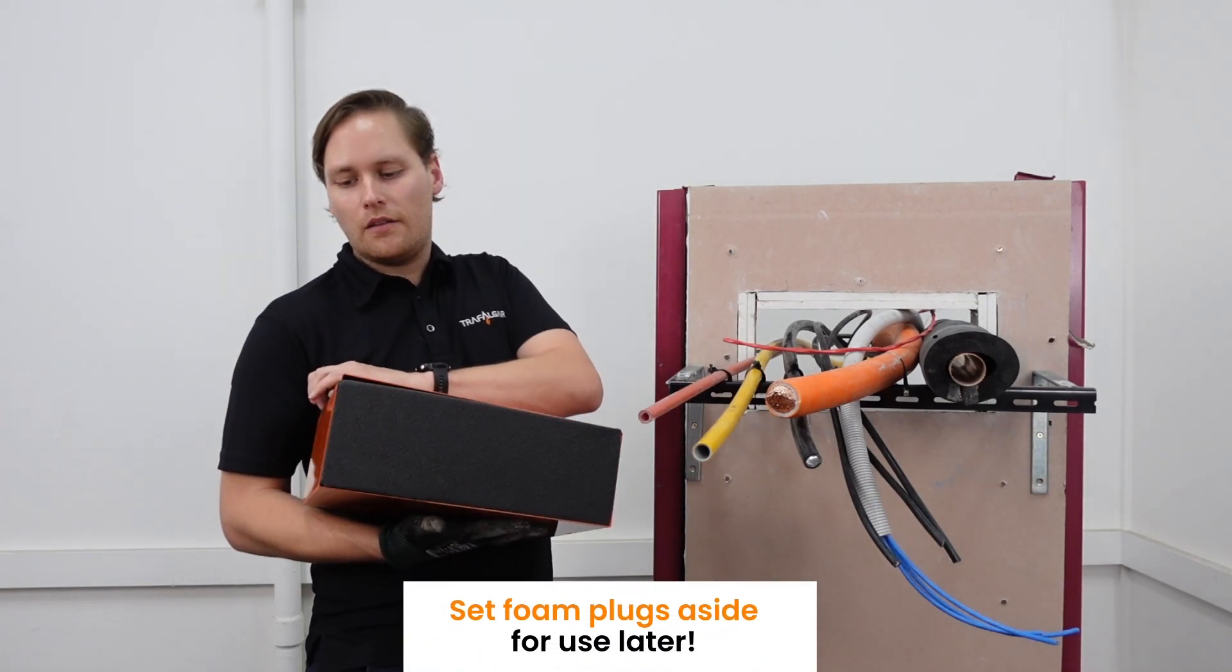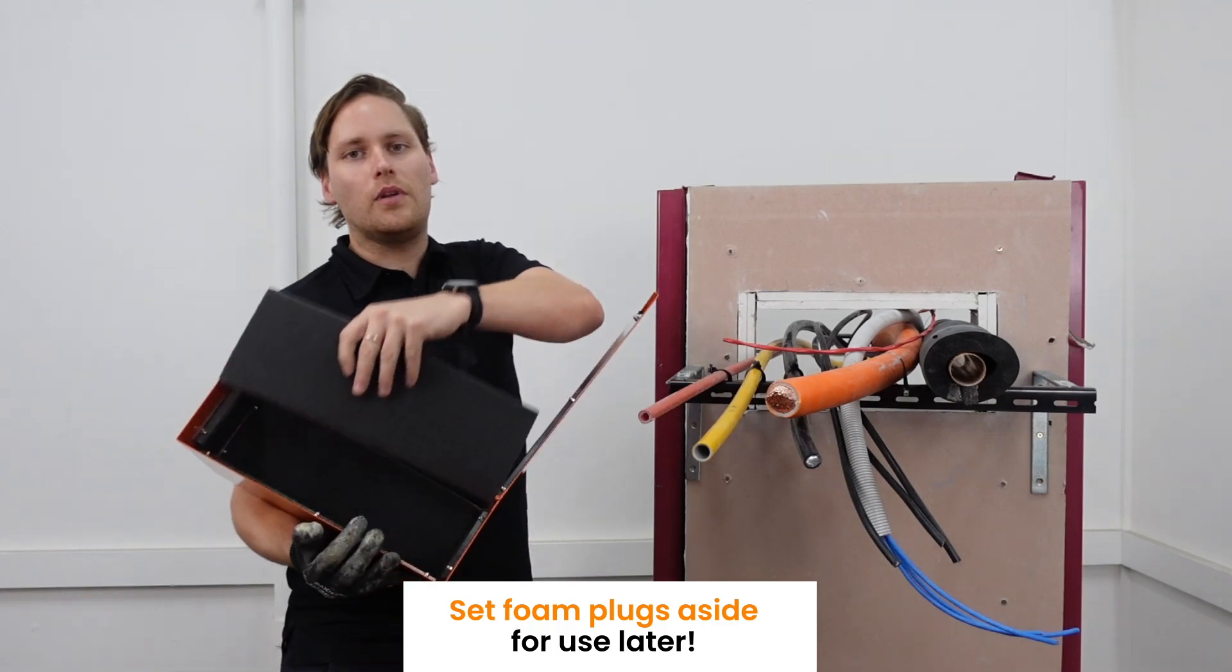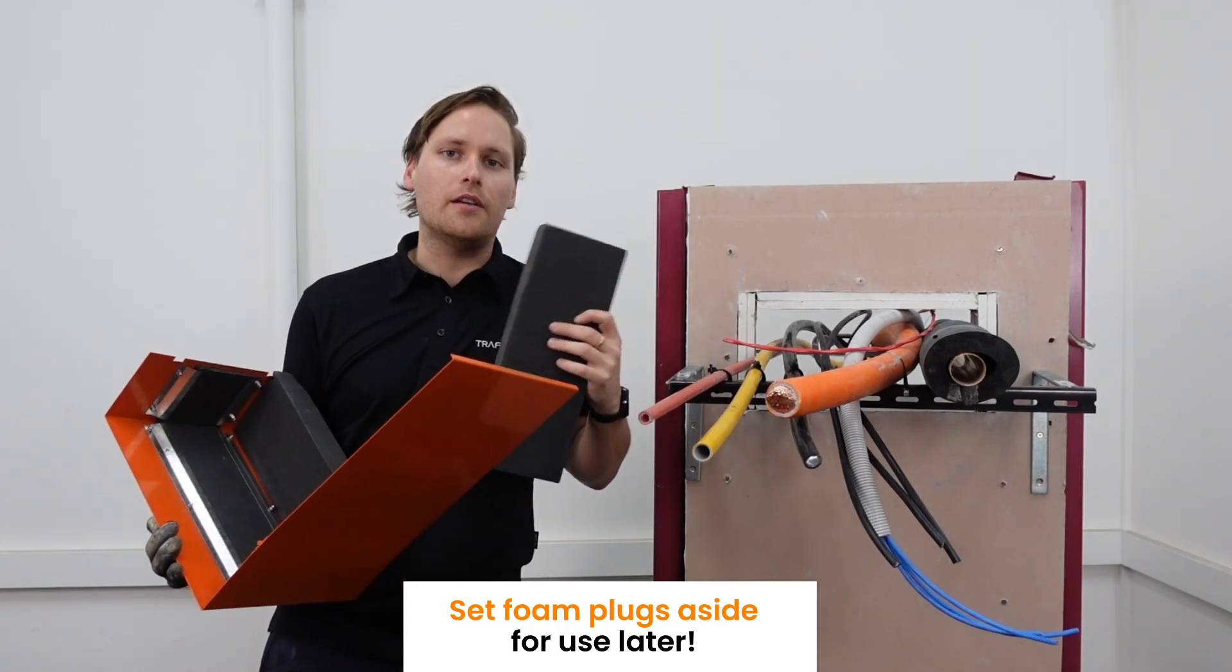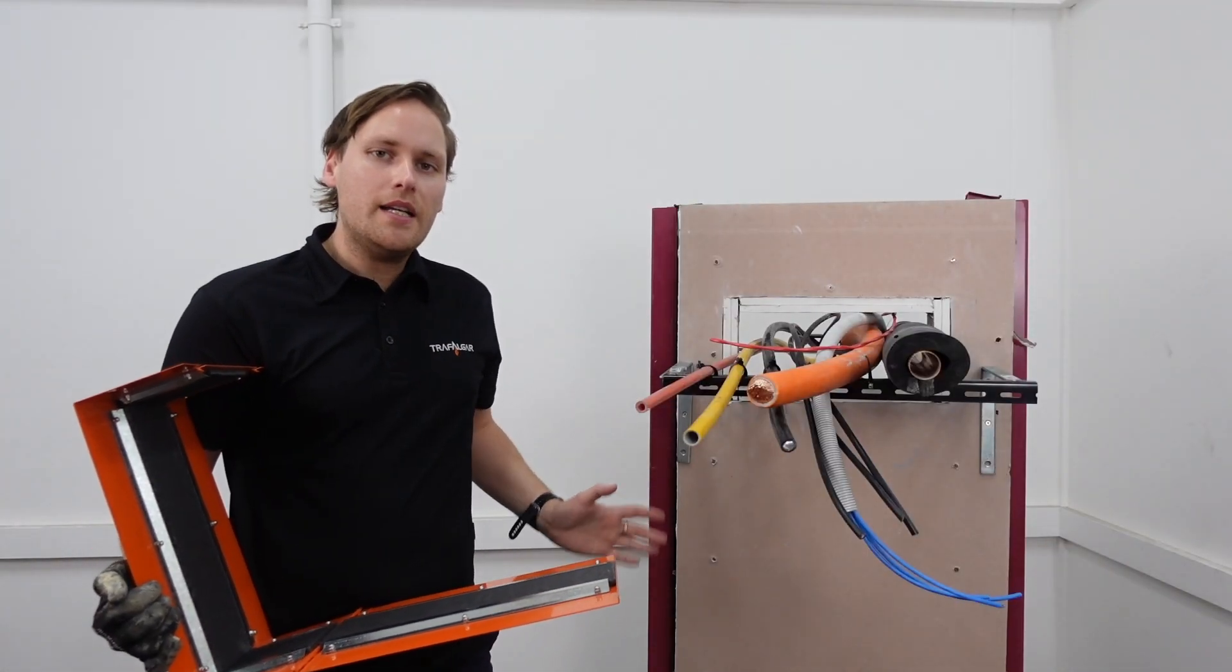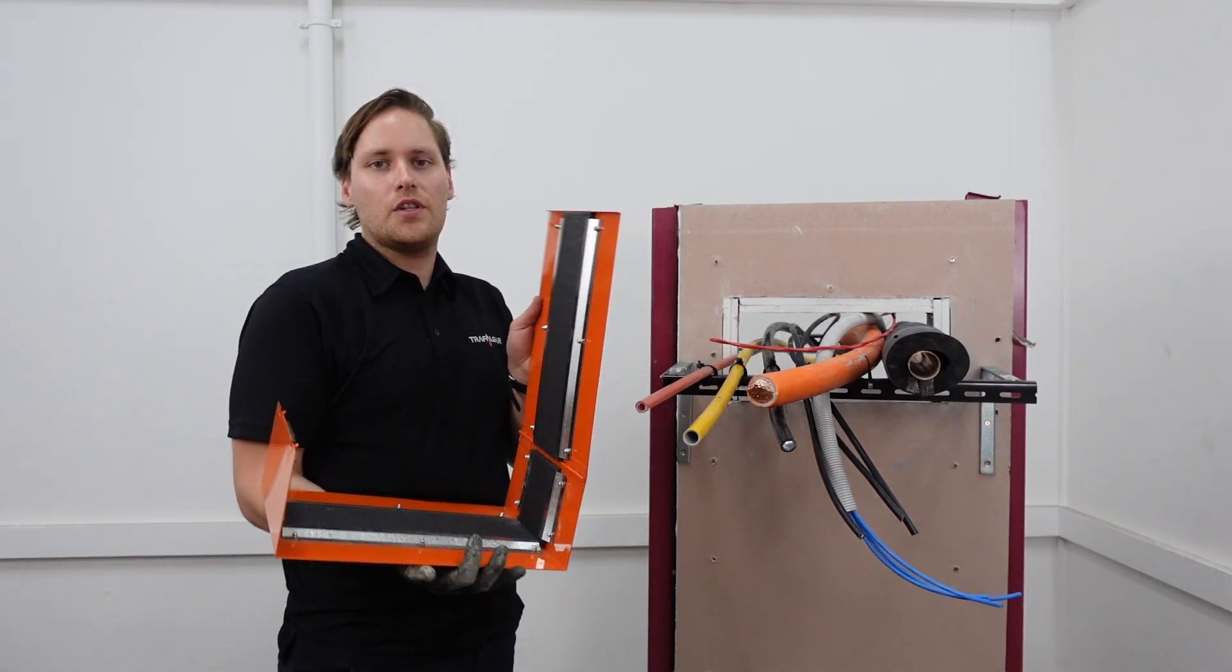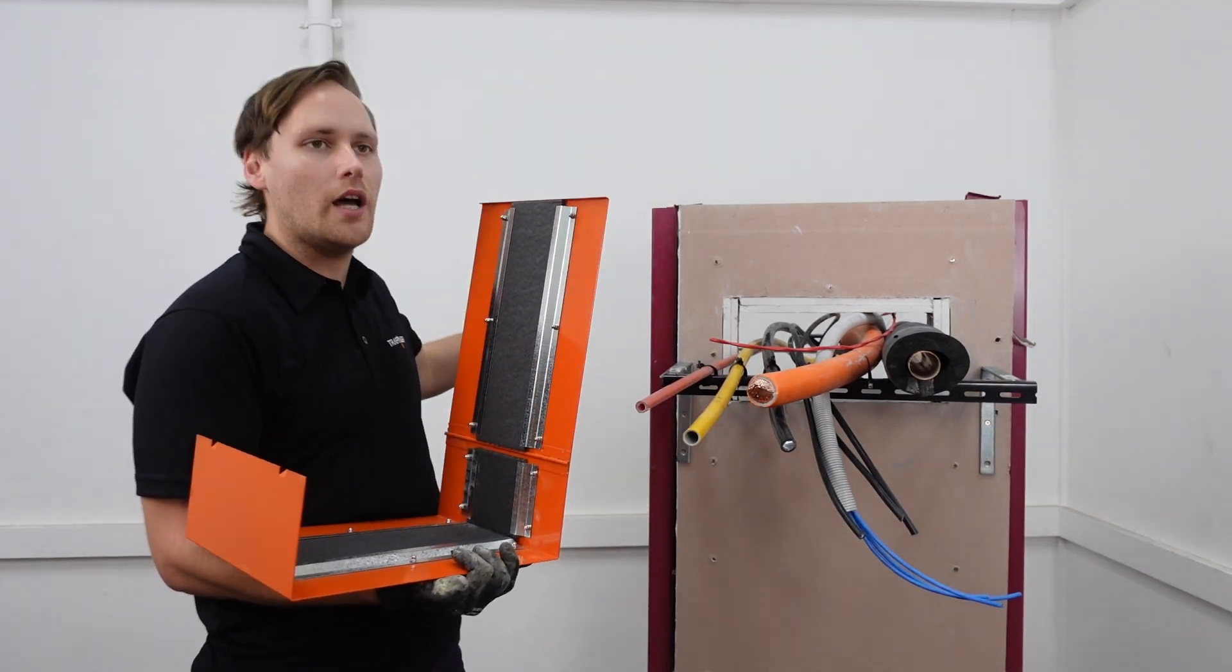Now once we get started, the first thing you're going to need to do is get your foam plugs and set these aside for later. Make sure you don't lose them. When you've got services that are already in place, all you need to do is open up the Superstopper and then retrofit around and slide it into the wall.